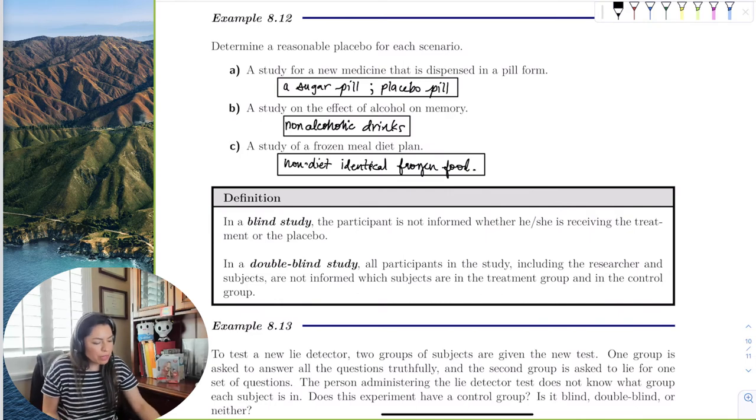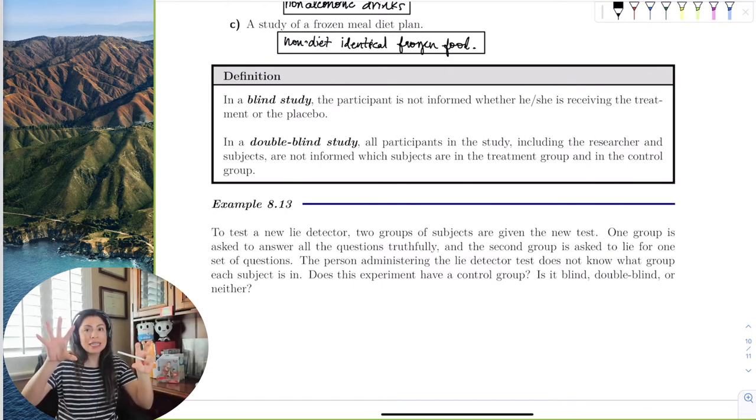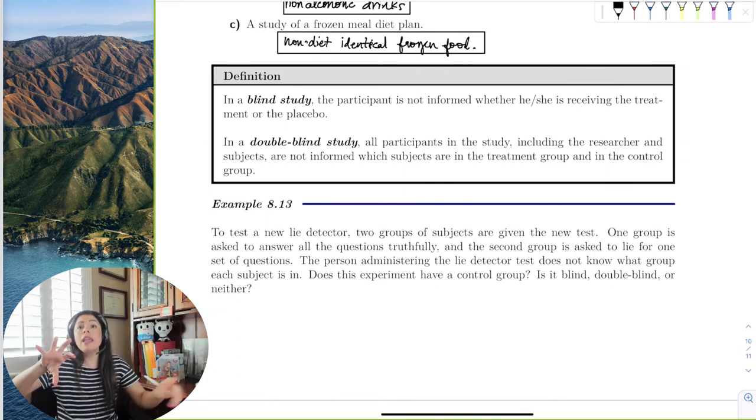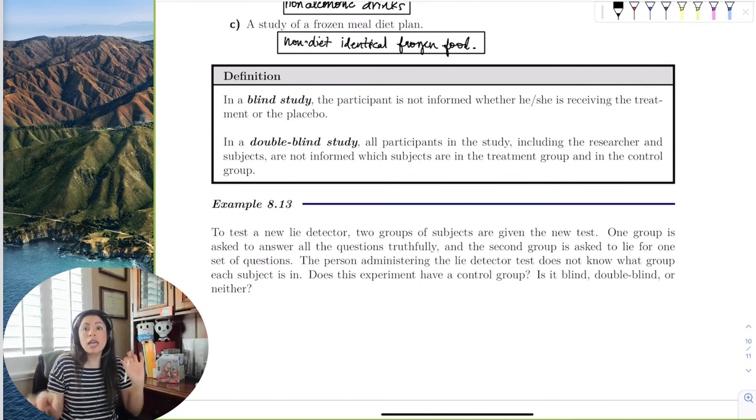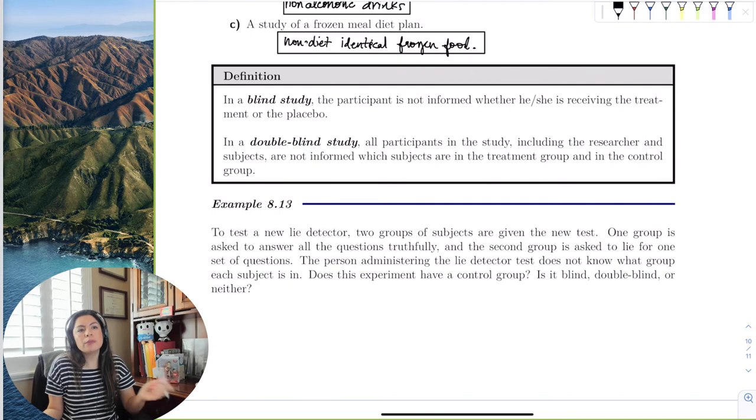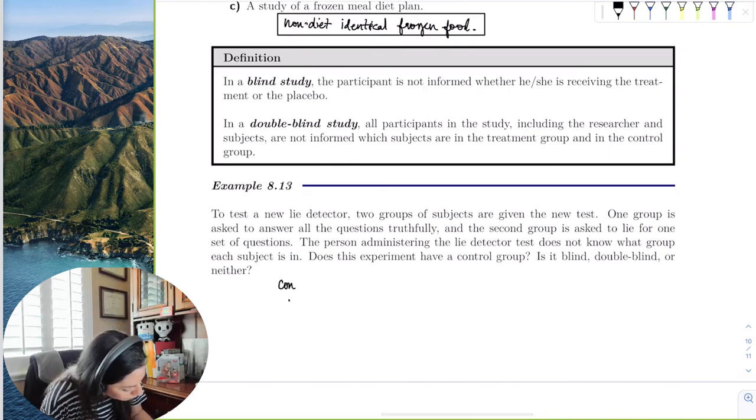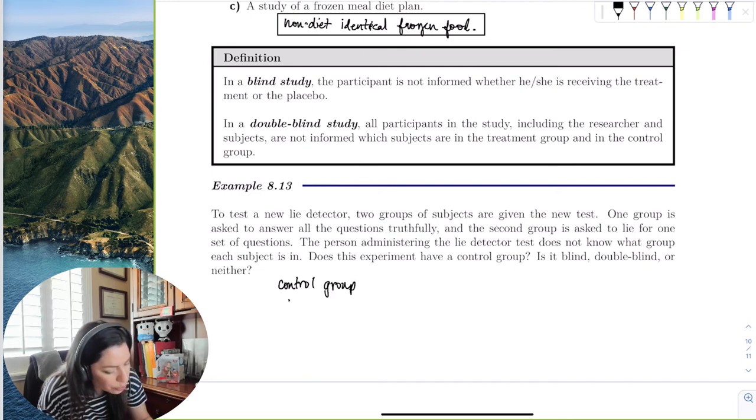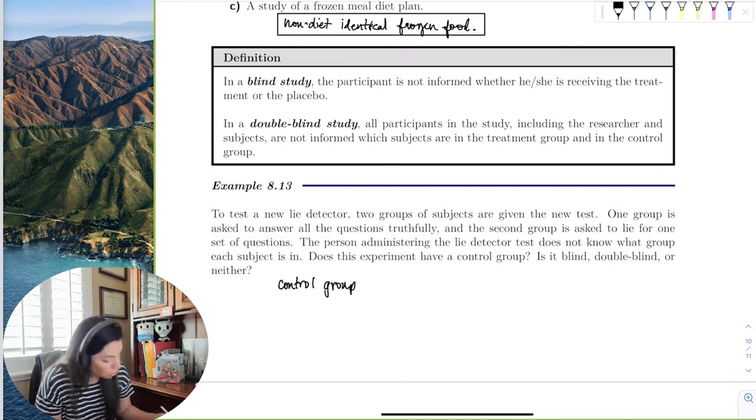So let's do an example with blind and double blind. Let's talk about a lie detector. Two groups of subjects are given a new test, right? One group is asked to answer the questions as they usually would truthfully. And the other group, we tell them, you better lie because we want to see this lie detector test works, right? So, but the person administering the lie detector test doesn't know. So they don't know who's going to lie and who isn't, but they just, they need to test their new lie detector. So does this experiment have a control group? Is it blind, double blind, or neither, right? So the experiment does have a control group, right? So the control group would be the people that isn't receiving treatment. That is status quo. Don't change anything. So what would people do during a lie detector test? They would just tell the truth, right? So the control group is the truth group.